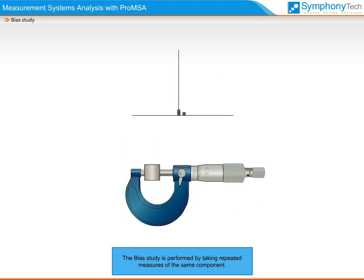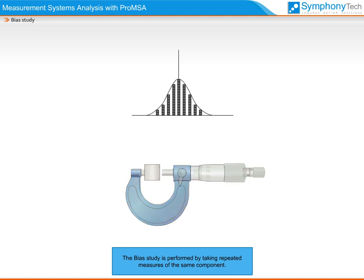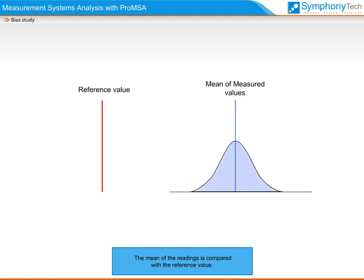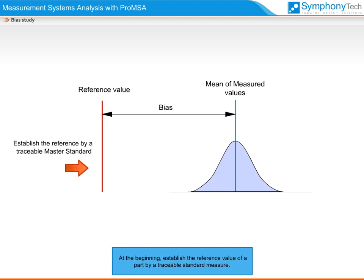The bias study is performed by taking repeated measures of the same component. The mean of the readings is compared with the reference value. At the beginning, establish the reference value of a part by a traceable standard measure.